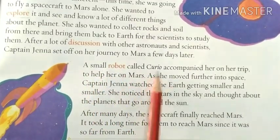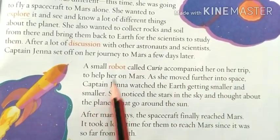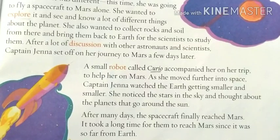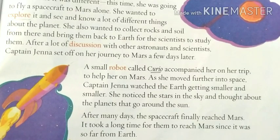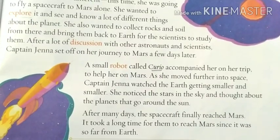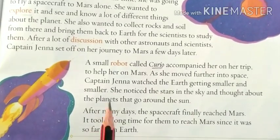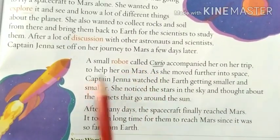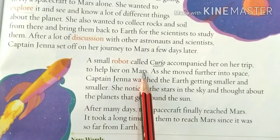A small robot called Curio accompanied Captain Jenna on her trip. A robot is not a human being — it is a machine that does work normally done by a person. It is controlled by a computer; it is a computerized machine. Curio accompanied Jenna so that the robot could help her on Mars.